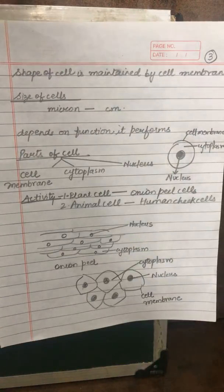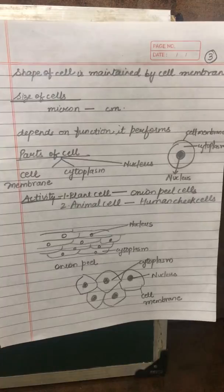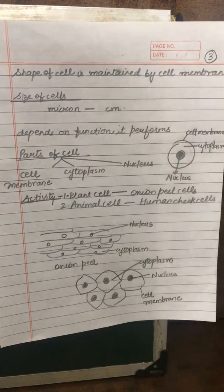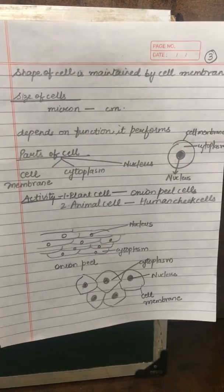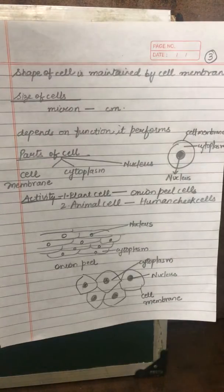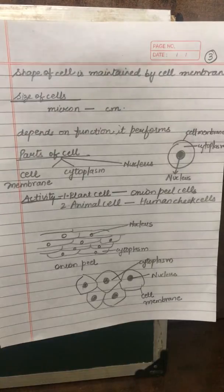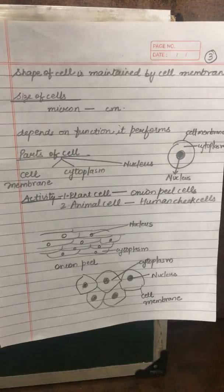So, in the videos on plant cell — onion peel cells — we have observed the parts of the cell: cell wall, nucleus, vacuoles. And in animal cells — human cheek cells — we have observed nucleus, cell membrane, cytoplasm. And as you have seen, we have used stains.